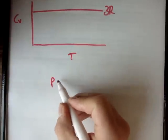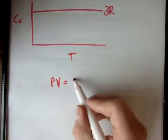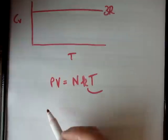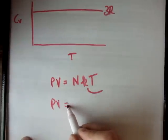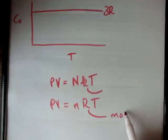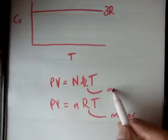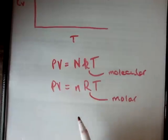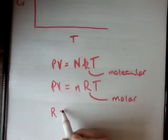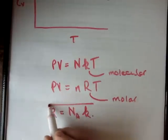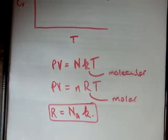The ideal gas equation says that pressure times volume is equal to n times k times T. You could think of k as the molecular gas constant. You could also rewrite this as pV equals n times R times T, where R is the molar gas constant. These two are related in that the molar gas constant R is equal to Avogadro's number times the molecular gas constant k. One mole has Avogadro's number of molecules, N_A.